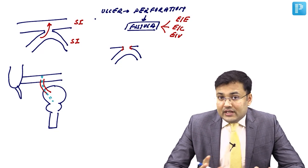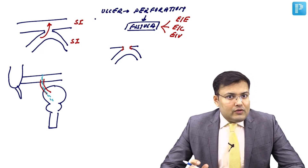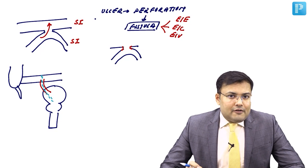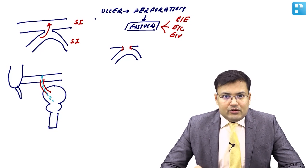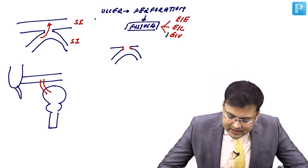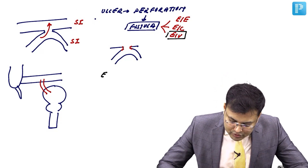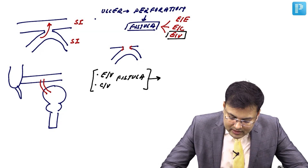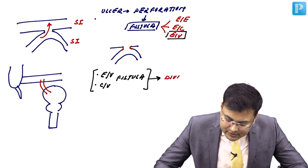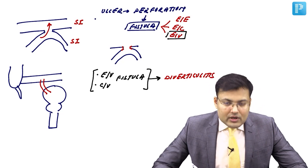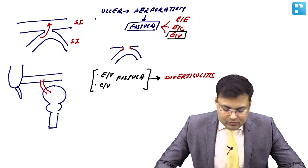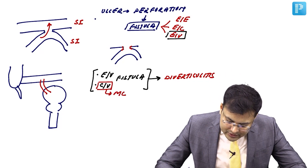Two important questions are frequently asked. First, the most common cause of colovesical fistula worldwide is diverticulitis — specifically between the sigmoid colon and the bladder. Similarly, the most common cause of enterovesical fistula overall is also diverticulitis. In colonic diverticula, colovesical fistula is more common than enterovesical fistula.